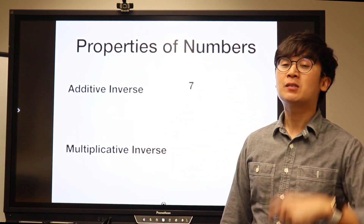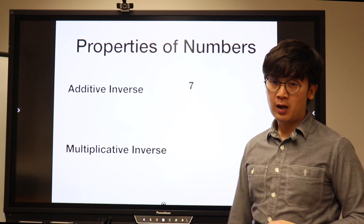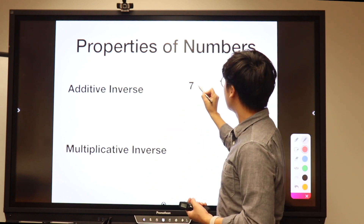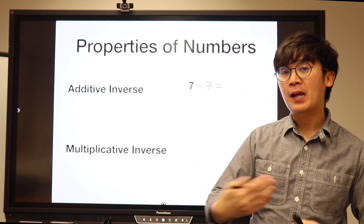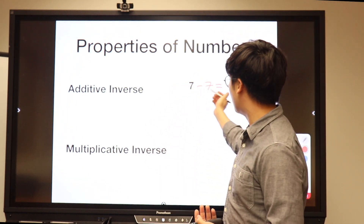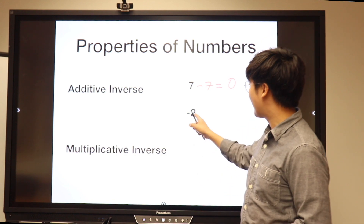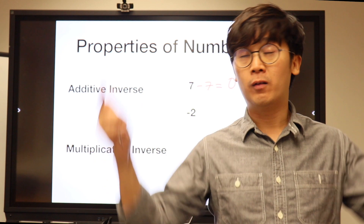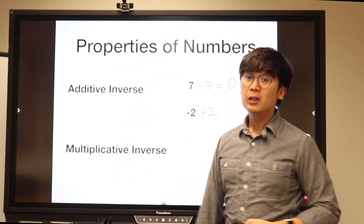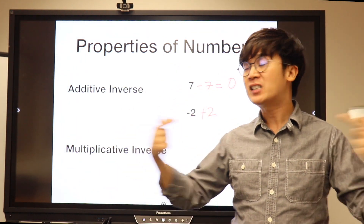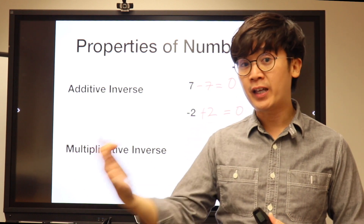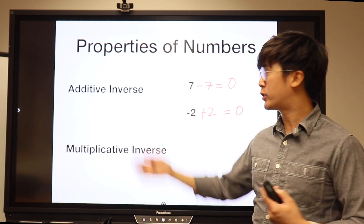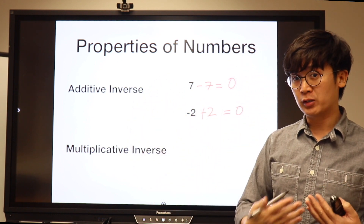I always ask my students: what is the additive inverse of seven, or the number that when you add to seven will equal zero? They will say negative seven. So I open the discussion about the additive inverse of seven being negative seven, which turns it to zero. I also give them a negative number like negative two and ask what they can add to make it equal zero, having them visualize the number line to find the answer.